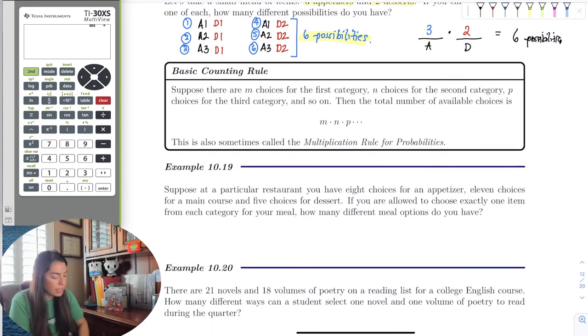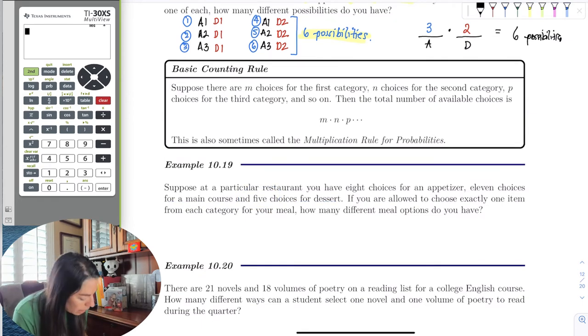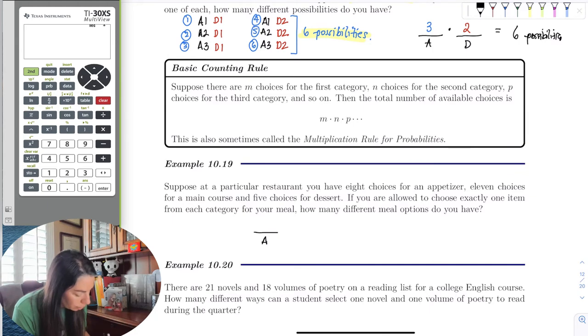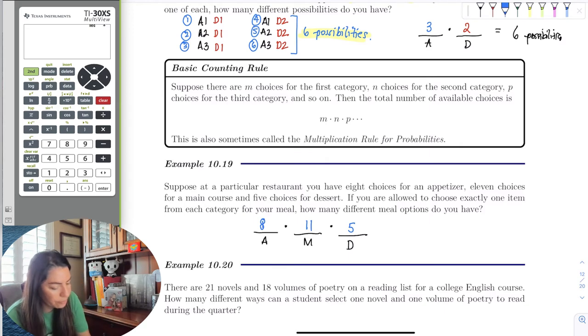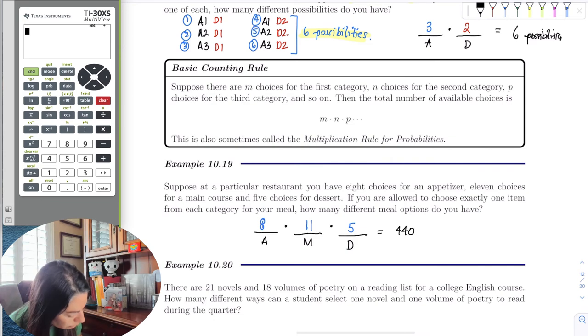So now let's say, okay, we're going to go to a different restaurant. Now we have eight choices for an appetizer, 11 choices for a main course, and five choices for dessert. This means I have one choice for appetizer, another choice for the main, and another choice for dessert. Using the basic multiplication rule, I have now three categories. In each category, I have eight choices for appetizer, 11 for the main, and five for the dessert. If I multiply those three, we get 440 different—and that's the keyword—different meal options.